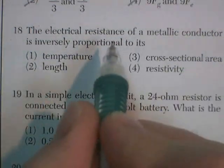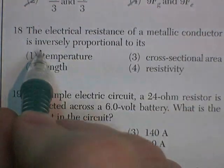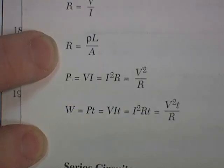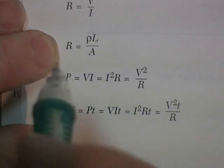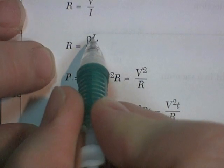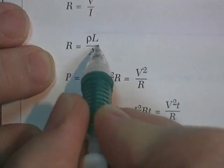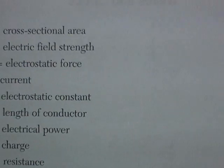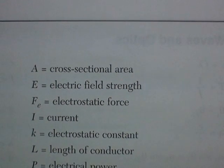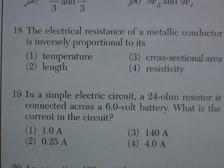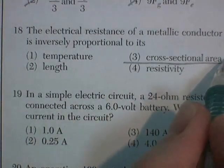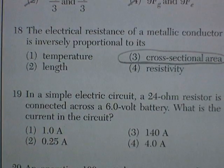Question 18. The electrical resistance of a metallic conductor is inversely proportional to... Let's get the equation. Resistance is directly proportional to the material's resistivity, directly proportional to the length, and inversely proportional to A, which is the cross-sectional area. So inversely proportional to cross-sectional area. These can be easy.